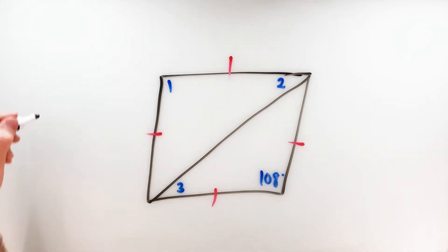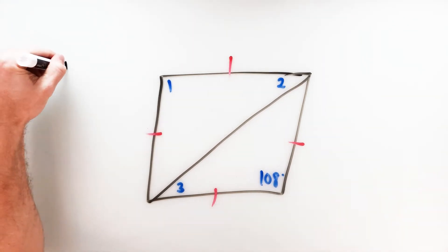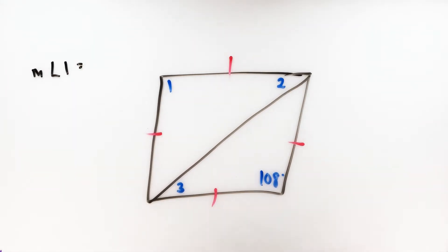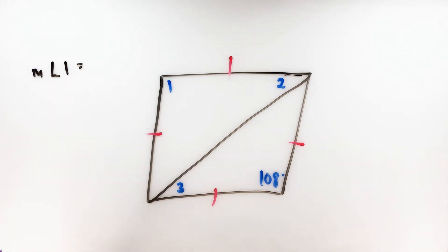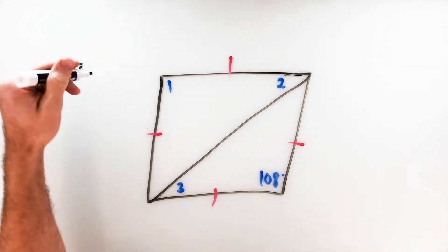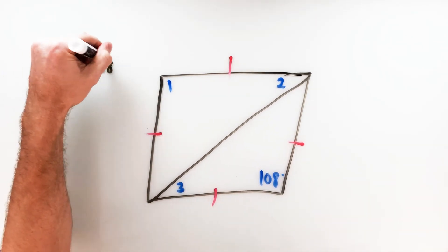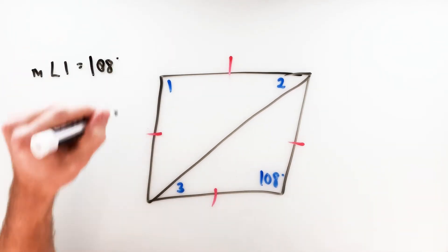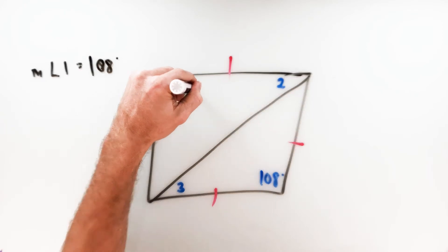Let's start with angle one. For this rhombus with a given angle of 108 degrees and a diagonal drawn through it, we need to find angles one, two, and three. Opposite angles in any parallelogram are congruent, so if we have 108 degrees at one vertex, angle one also has to be 108 degrees.